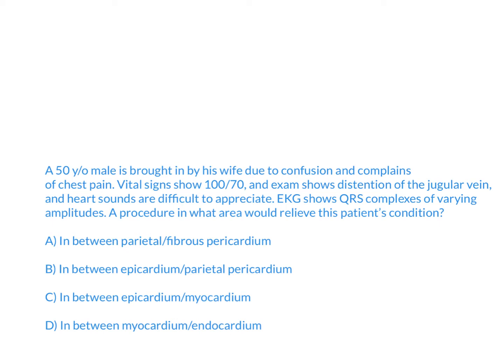A 50-year-old male is brought in by his wife due to confusion, and the patient complains of chest pain. Vital signs show a blood pressure of 100 over 70. Exam shows distension of the jugular vein, and heart sounds are difficult to appreciate on exam. EKG shows QRS complexes of varying amplitudes. A procedure in what area would relieve this patient's condition?